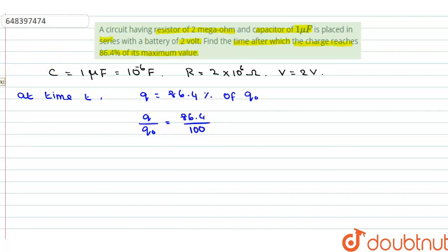Here, using the equation which shows the charging, that is q is equal to q0 times (1 minus e to the power minus t by tau), where tau is the time constant. Its value is tau is equal to RC.